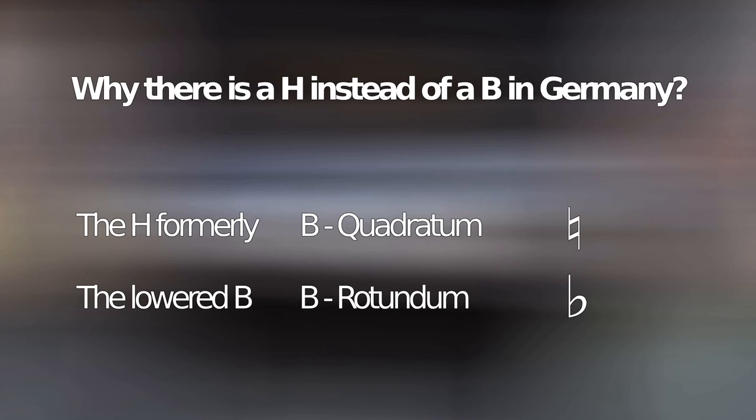When people started to print the notes instead of copying them by hand, many printers did not have this squarish sign and therefore used a similar looking small H. So in Germany, Scandinavia and some Western Slavic countries, the B quadratum became an H.